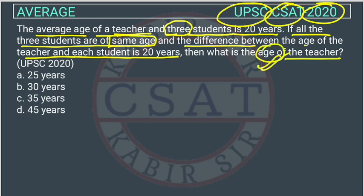It looks like this is a problem on age, but the average age is given. So in this question, the examiner is using the concept of average — applying the concept of average to a problem on ages.